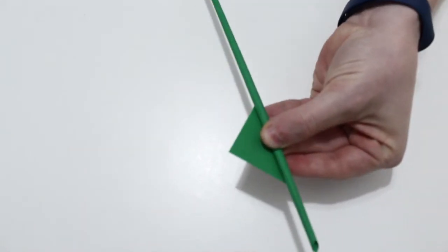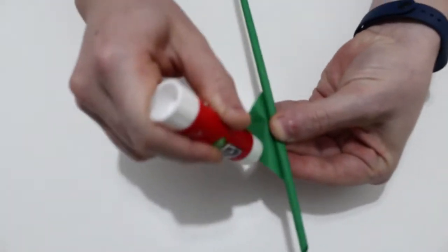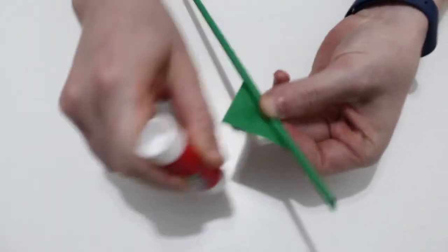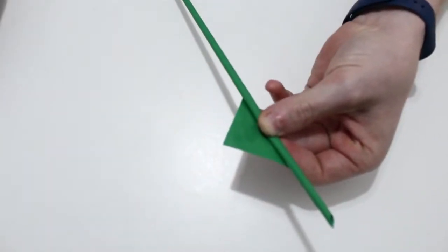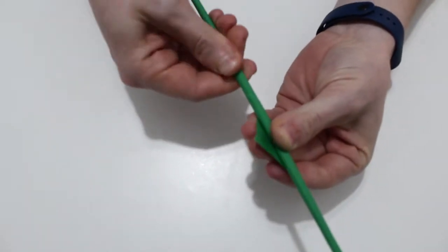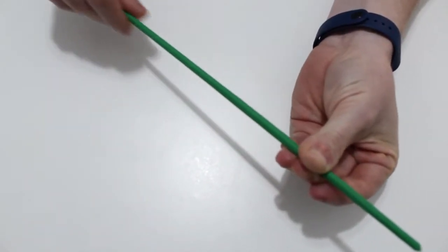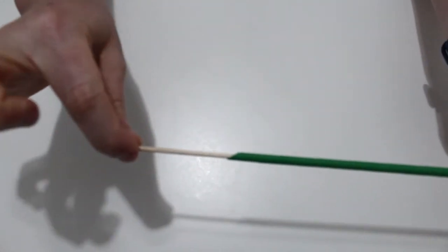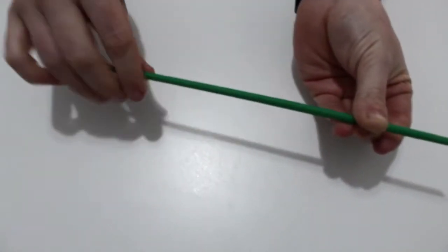Ahora cuando hemos llegado al final le ponemos un poquito de pegamento en la punta. Ahora saco el palillo de brocheta y ya tenemos nuestro tallo.